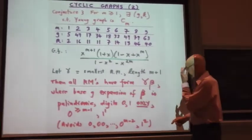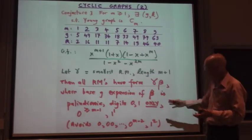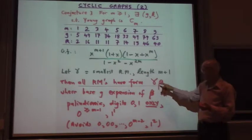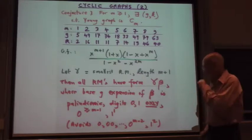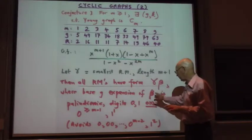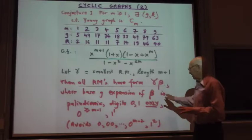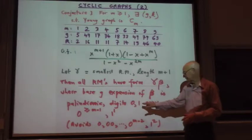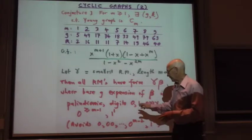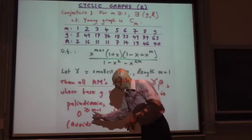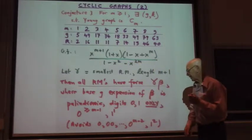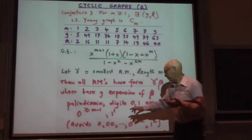We know it exists. Then I can almost prove that all the reverse multiples have the form gamma times beta, where the base geo-expansion of beta is palindromic. Again, it has digits 0 and 1 only, and any run of zeroes must have length at least n minus 1, and there can be no repeated ones.